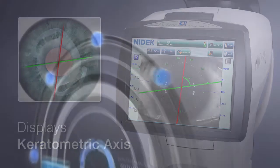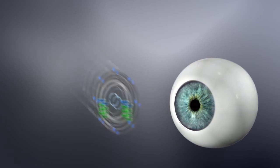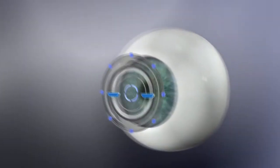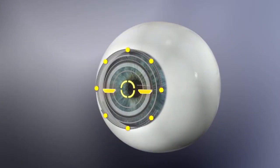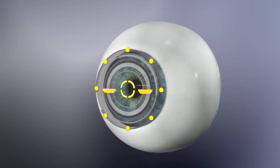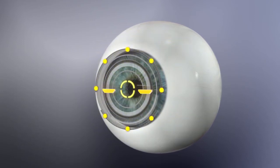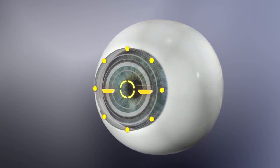The speed of the AL scan is made possible by 3D auto-tracking, which follows patient movements on the X, Y, and Z axis. As soon as the auto-tracker obtains correct alignment, the auto-shot function immediately begins capturing patient data.